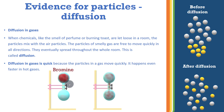Let's look at diffusion in gases. When chemicals like the smell of perfume or burning toast are released in a room, the particles mix with the air particles. The particles of smelly gas are free to move quickly in all directions and eventually spread throughout the whole room — this is called diffusion. Diffusion in gases is quick, unlike in liquids, because gas particles have the highest energy among the three states of matter.